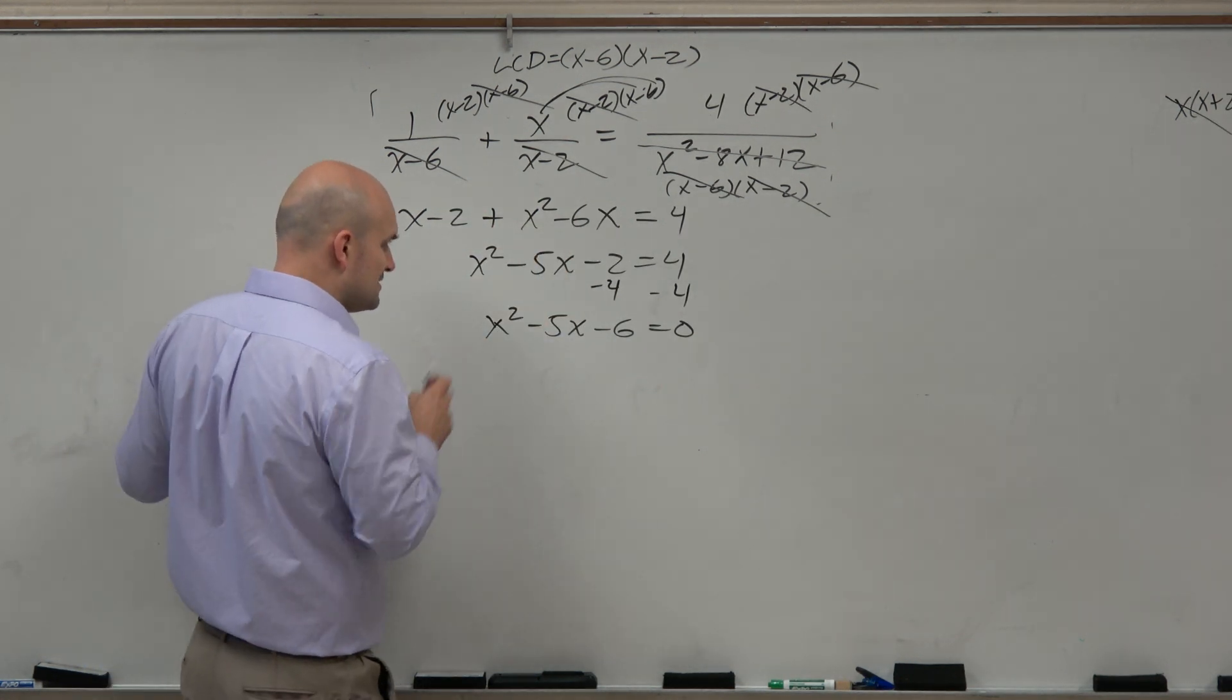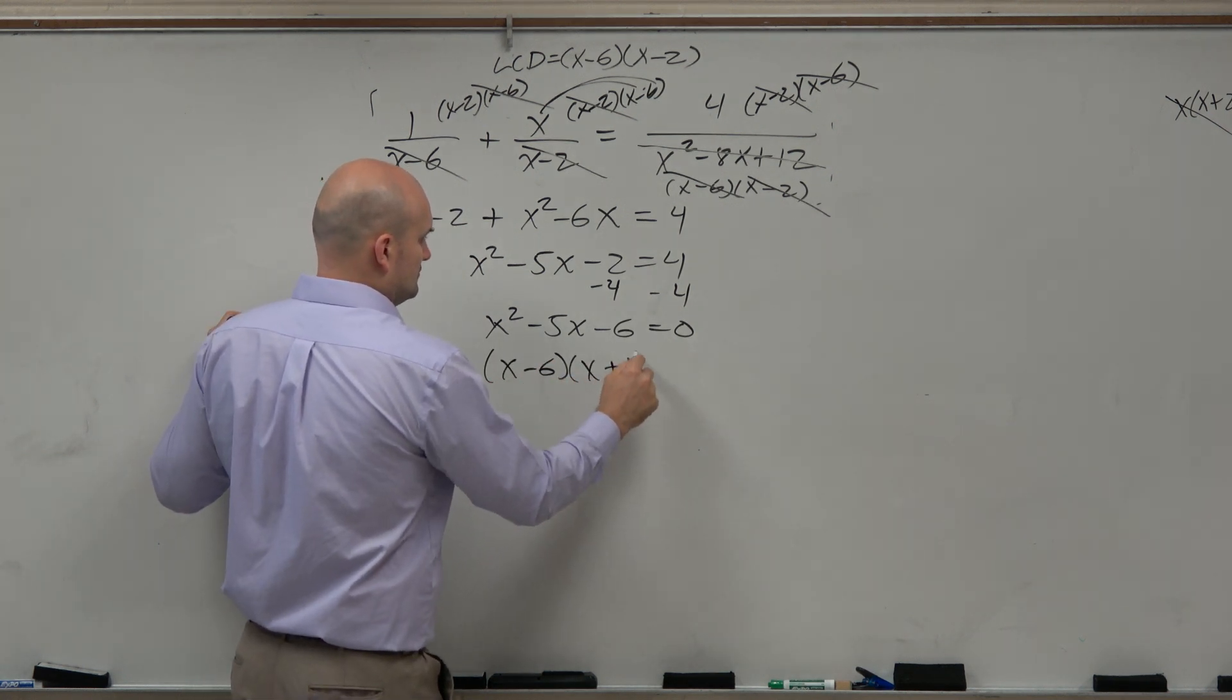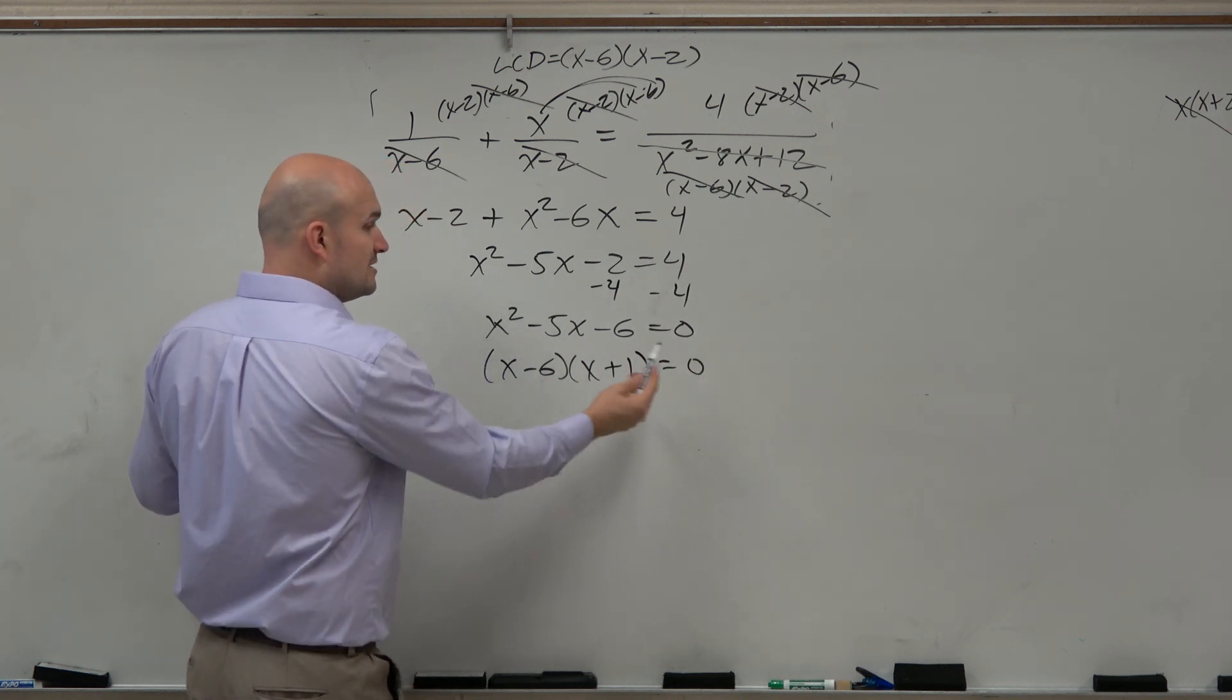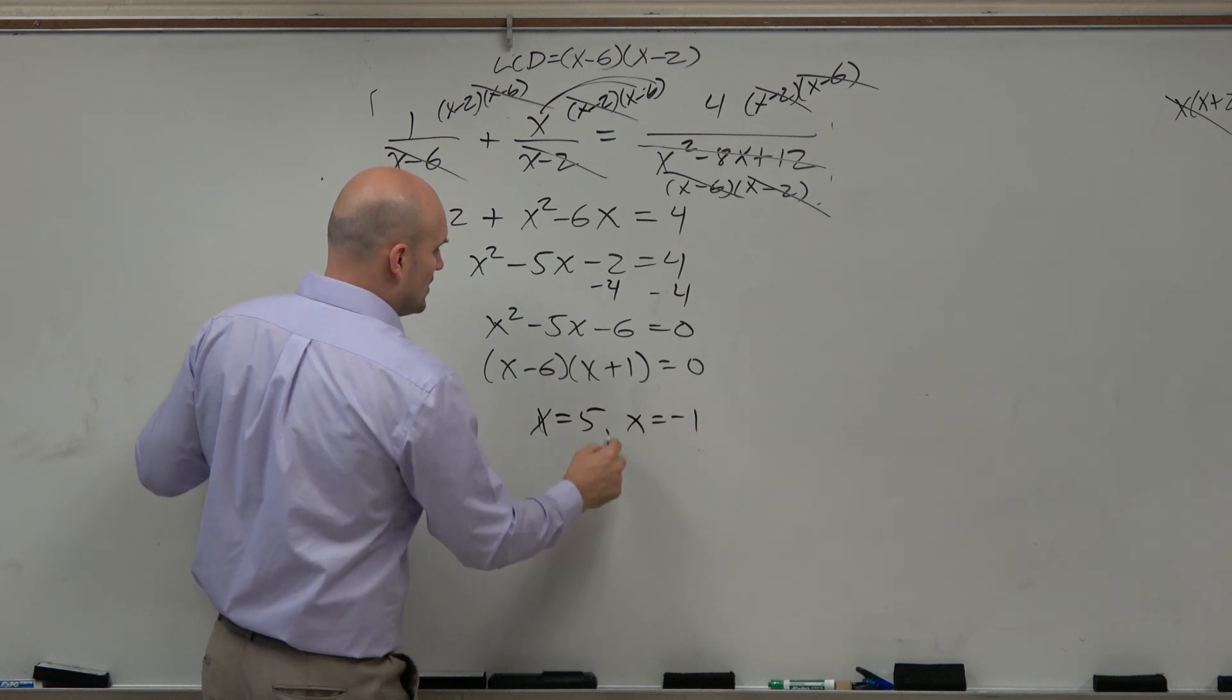And in this one, do we have something that's factorable? Looks like it. Therefore, now we have a product equal to 0. So x is equal to 5, and x is equal to negative 1.